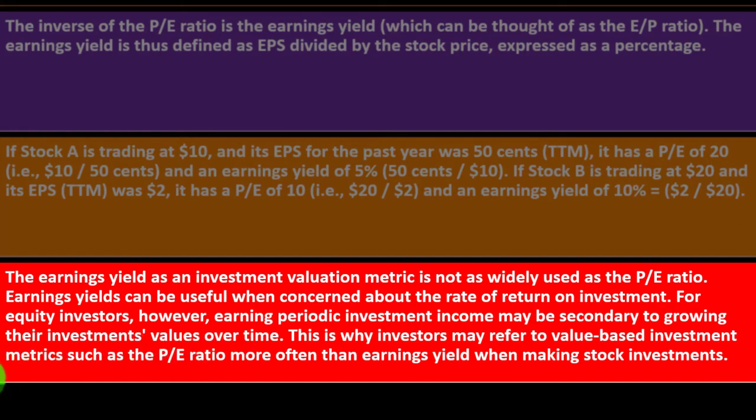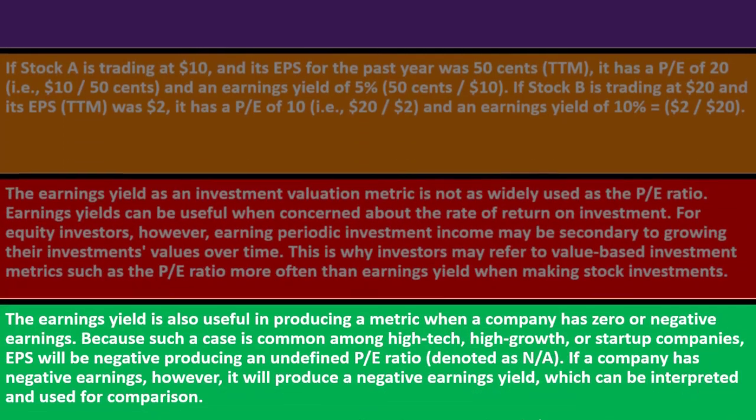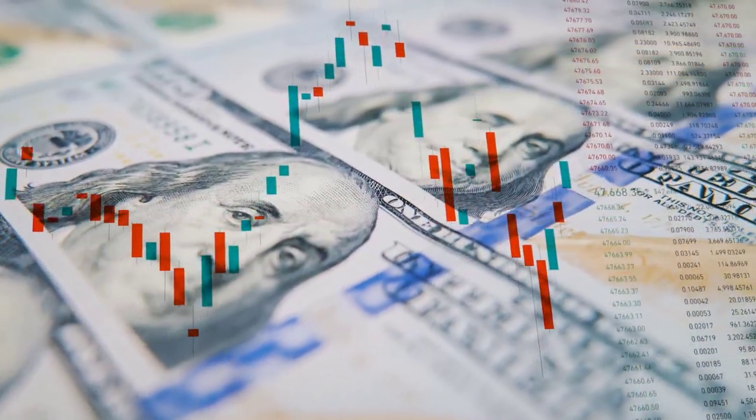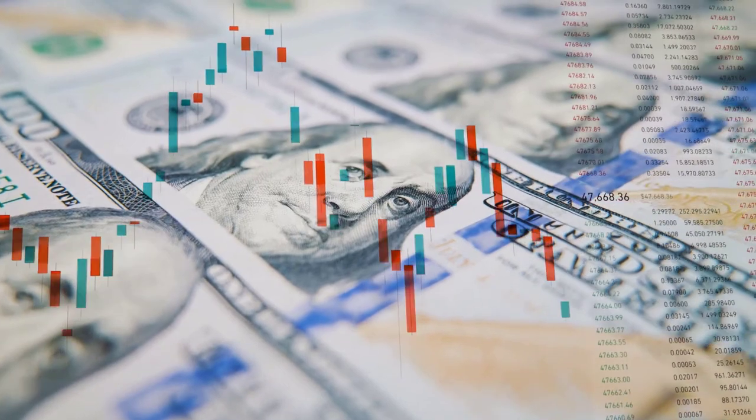When looking at earnings yield for one year, it can be a useful comparison tool for yields — but if we're only looking one year out, that's often shorter than our investment horizon. This is why investors may refer to value-based metrics such as the PE ratio more often than earnings yield for stock investments. Earnings yield is also useful when a company has zero or negative earnings — common among high-tech, high-growth, or startup companies — producing a negative earnings yield which can still be interpreted and used for comparison.